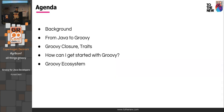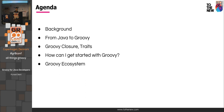Today we are going to talk about a little bit of background about what Groovy is and what the features of Groovy are, and how we can write a similar version in Groovy for programs written in Java. Then we'll dive into Groovy closures, which are very important and powerful. Then we'll see what traits are, and how to get started with the Groovy ecosystem.